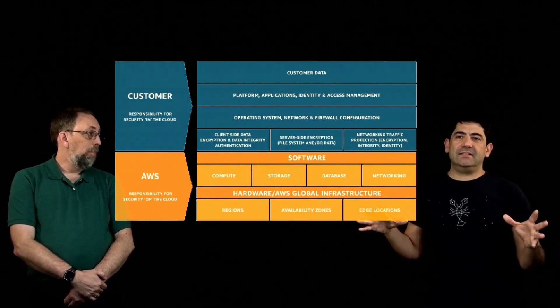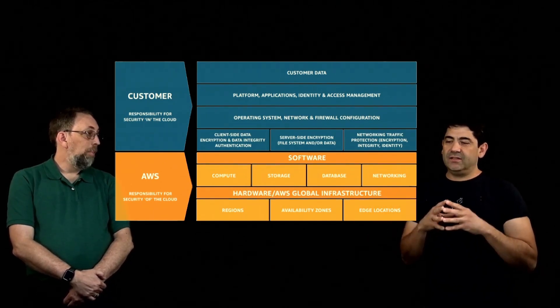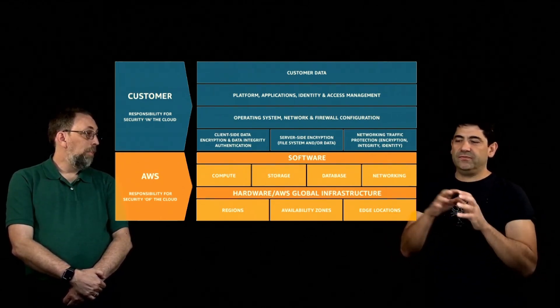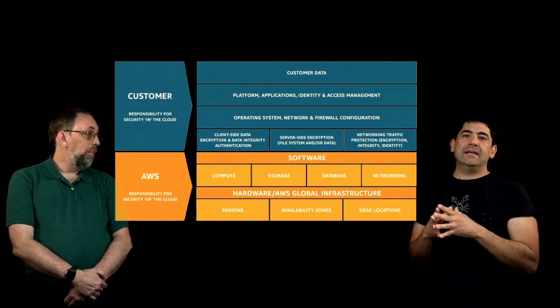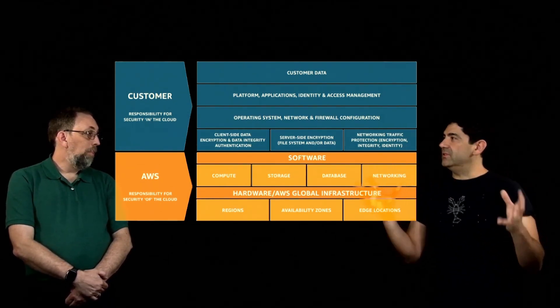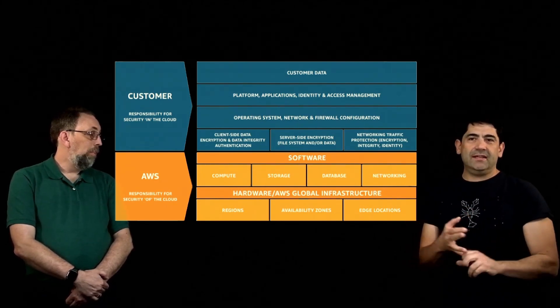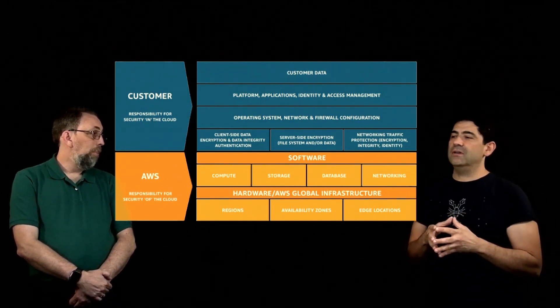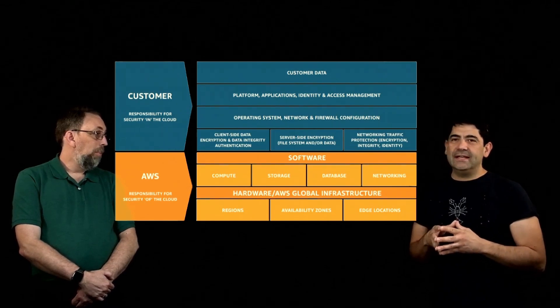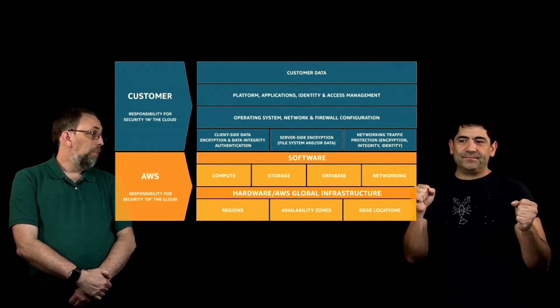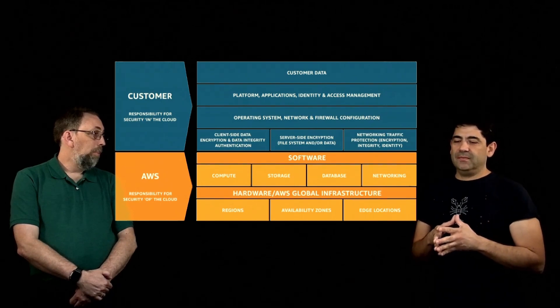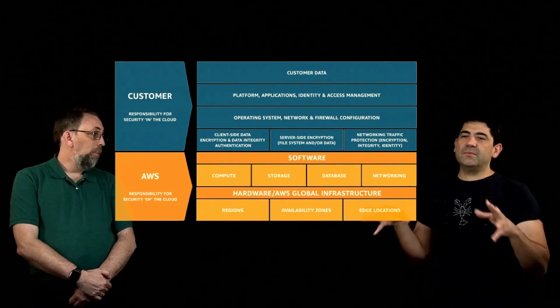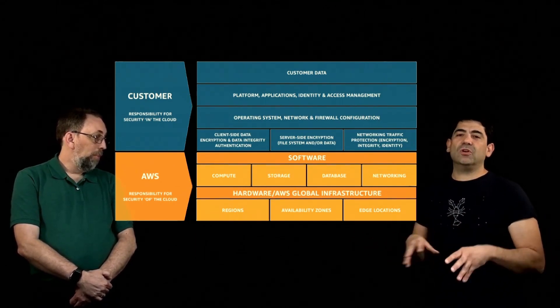So what Ubuntu does here in this model is that Ubuntu LTS has security coverage for five years. Since the release date, you will have five years of security coverage of all the main components of the operating system. But when it comes to applications you put on top, like an NGINX web server, API, MongoDB or Kafka, many databases and so on, this is up to you to find patches from upstream or finding different ways to patch it. Ubuntu also offers this subscription model called Ubuntu Pro, which also covers these kinds of applications.